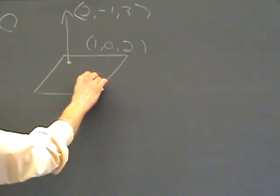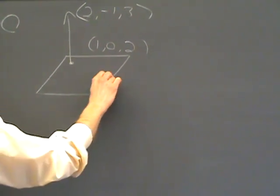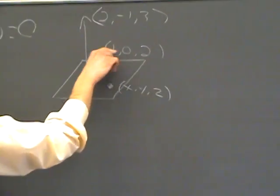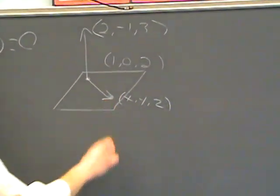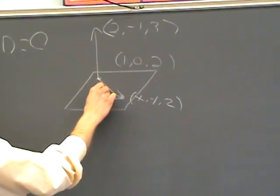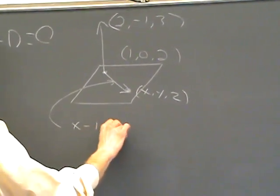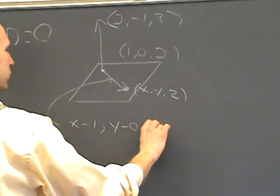You set it up. Take any other point in the plane, X, Y, Z. Make a vector out of the given point and that point. So this vector is X minus 1, Y minus 0, and Z minus 2.